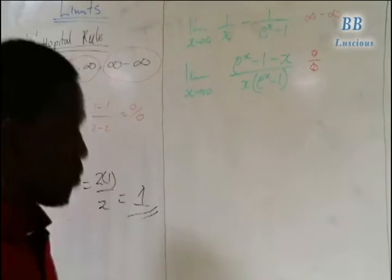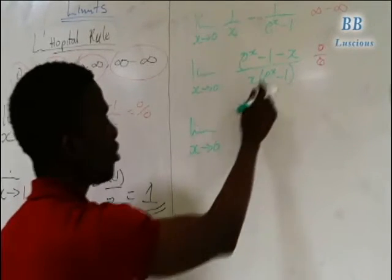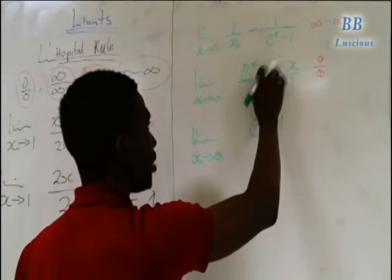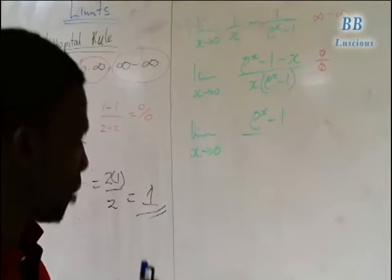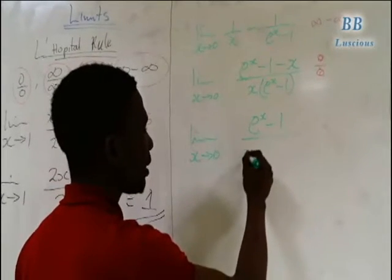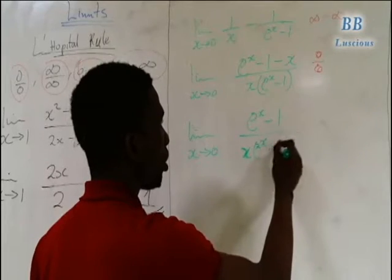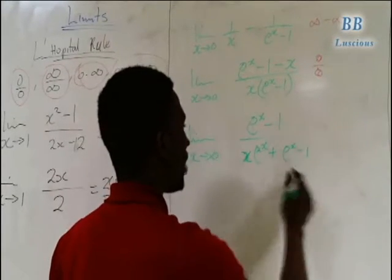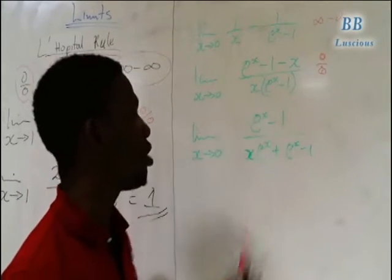Since we have 0 over 0, we need to find the first-order derivative. This gives us limit as x tends to 0 of (e^x minus 1) in the numerator. Note the minus 1 drops and the minus x becomes 1. For the denominator, we apply the product rule to get x·e^x plus e^x minus 1. If you don't know how to find derivatives, you can check my other videos.